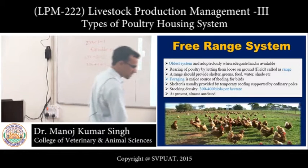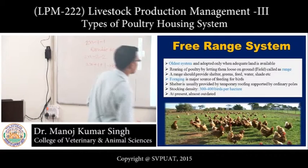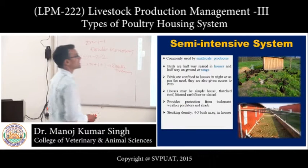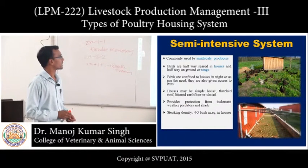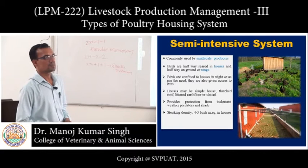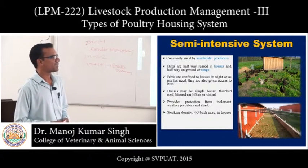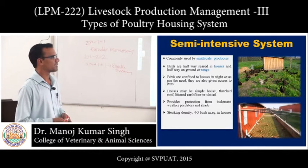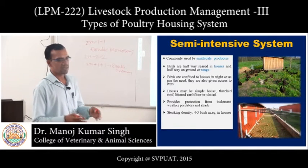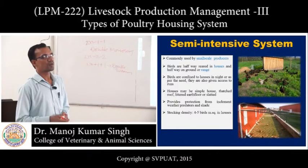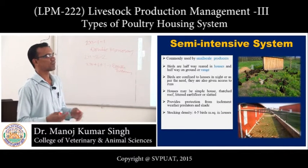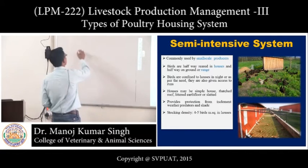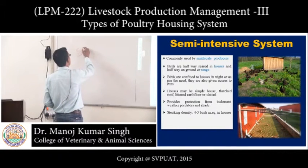At present, this free range system is totally outdated due to more land requirements. The next system is the semi-intensive system, mainly applied by small-scale producers. In this system, a shelter and a run are provided for the poultry. The main foraging activity is limited; feed is provided inside the pen. Stocking density is 4 to 5 birds per square meter.